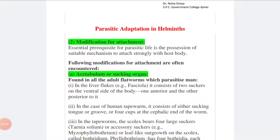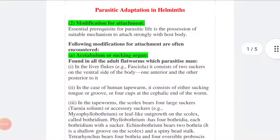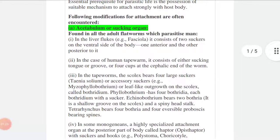The next category is modification for attachment. Essential prerequisite for parasite life is possession of suitable mechanism to attach strongly with host body. Where they live, they need to attach strongly inside the host body or wherever they live. If they live in an intestinal tract, they have to attach there. Following modifications for attachment are often encountered.